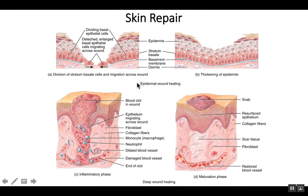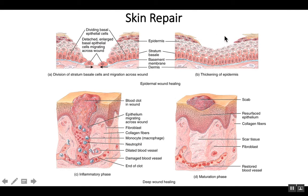Epidermal wound healing is fairly straightforward and involves two major processes: migration and stimulation of cell division. The cells of the stratum basale migrate across the wound, and then begin to divide a little faster than they normally do. This replaces the lost epidermal layers. So you get migration and growth of the keratinocytes.